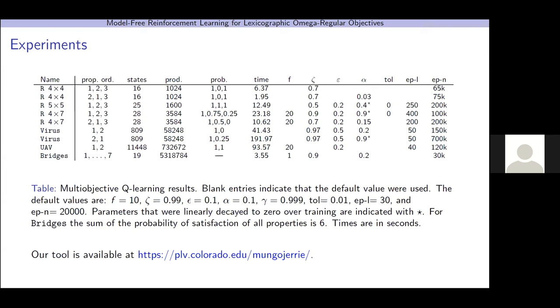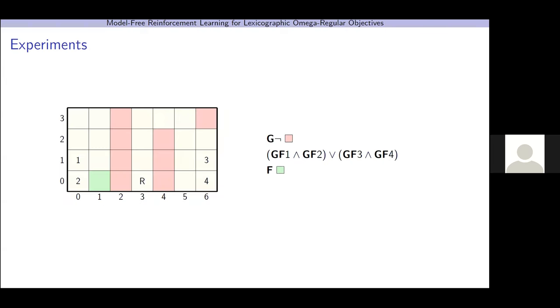So, there's an interesting case captured by our reduction, which is when we set f to 1. This is no longer maximizing for the lexicographic objective, but is instead maximizing the sum of the probabilities of satisfaction of all the properties. This is an interesting case captured by our reduction. But let's look at this particular example here, robots 4x7, where we have the property order 2, 1, 3.